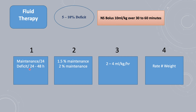In one guideline, the maintenance is given over 24 hours and the deficit is given over 24 to 48 hours. In another guideline, the patient is given 1.5 times maintenance if their weight is less than 30 kg, and double maintenance if their weight is more than 30 kg. Another guideline says to give fluid at the range of 2 to 4 ml per kg per hour. And in other guidelines, the rate of fluid is calculated by weight.